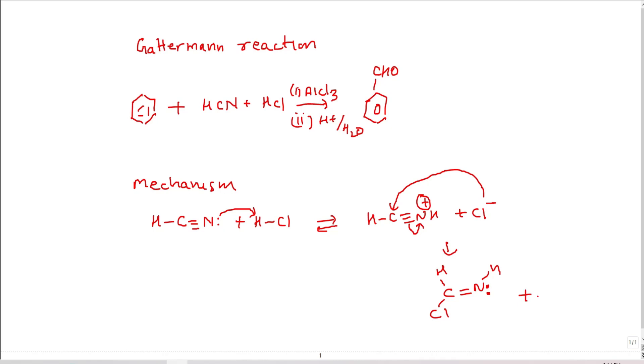There are lone pairs; these lone pairs can interact with aluminum. Aluminum has d orbital and it can accept electrons from nitrogen. Such an interaction places a small positive charge on nitrogen and that in turn puts a small amount of positive charge on carbon. Now, once this interaction takes place, carbon becomes electrophilic.